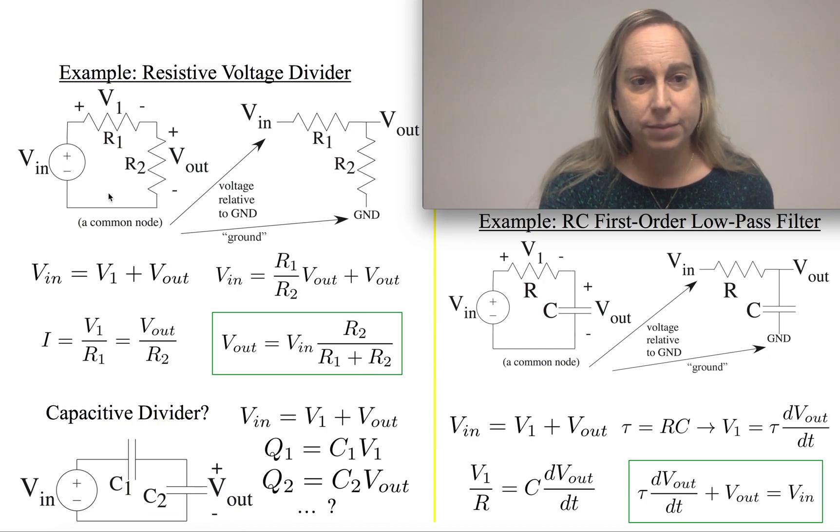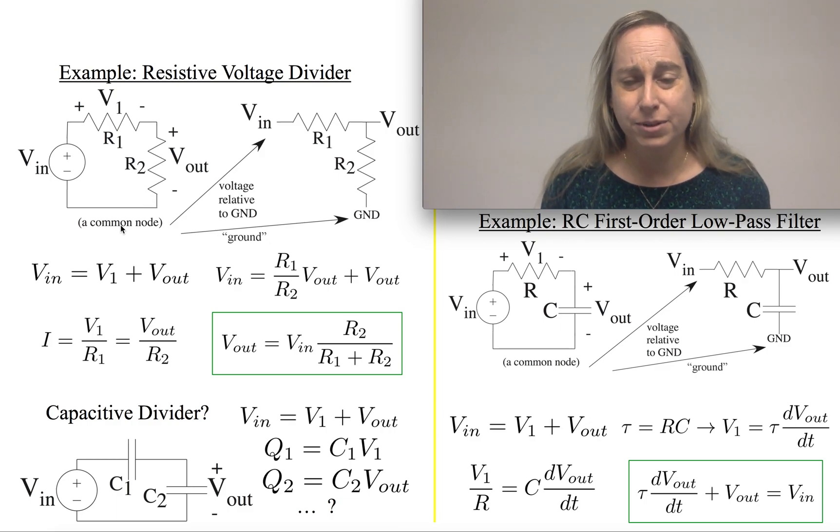The first thing is we'll often have a common node right here. And we'll often just say, well, why don't I just call that common node 0, or I'll call it ground, just to make it easy, and then everything is relative to that node.